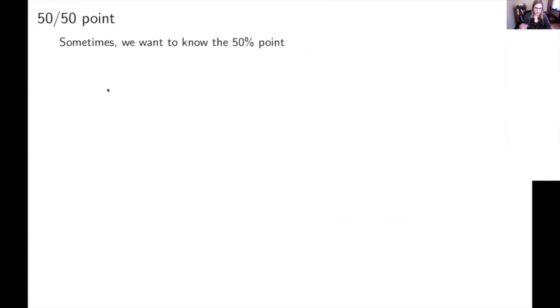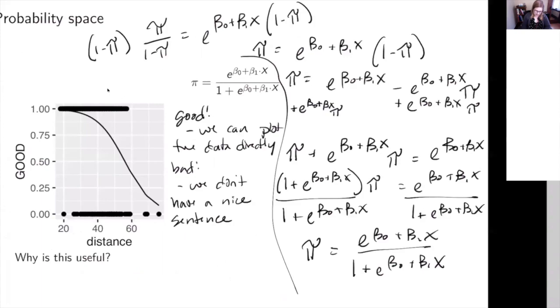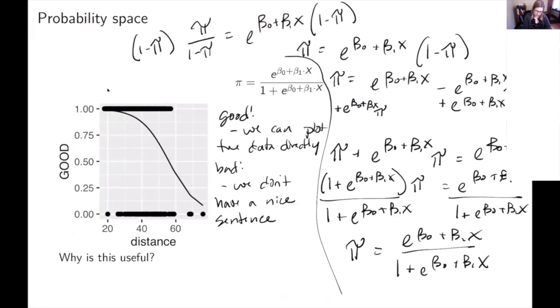So the last thing is sometimes we want to know the 50 percent point. So if I go back to my probability space, if I was at 30 yards, I would go up to the line and I would predict probability.